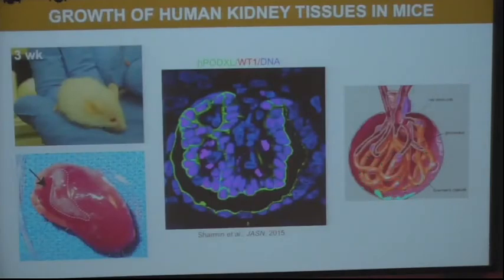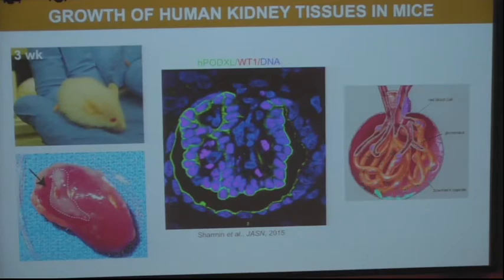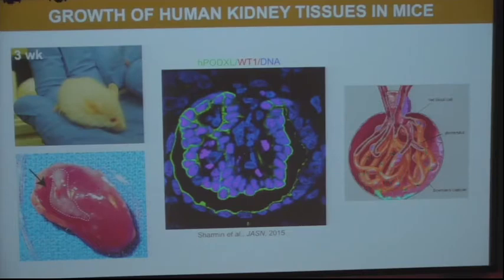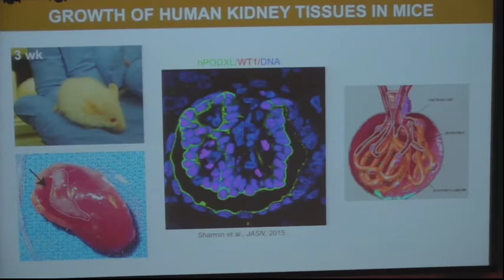A very exciting development is that our lab and others are transplanting these organoids into mouse kidneys to see whether they can provide functional benefit. While functional benefit hasn't been fully shown yet, these organoids do form very organized structures in the mouse kidney that closely resemble a human glomerulus and nephron in vivo — forming the Bowman's capsule structure that collects filtrate from blood through podocytes and drains it into the nephrons. This gives excitement that in the long term we may produce functional kidneys to benefit patients.